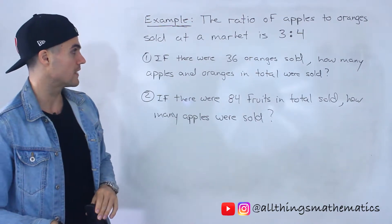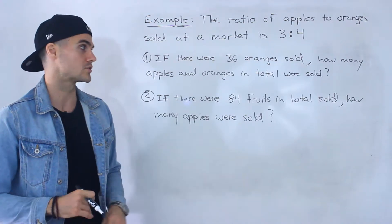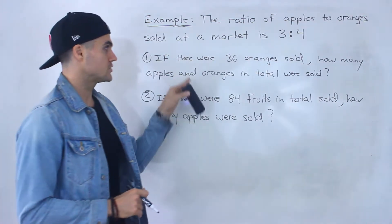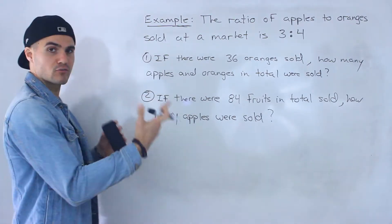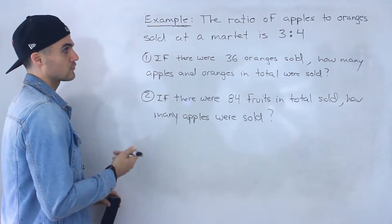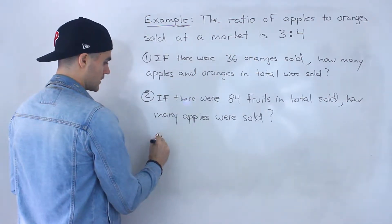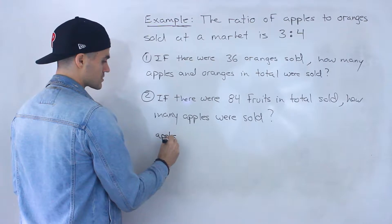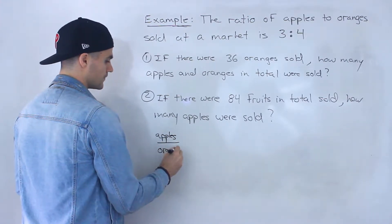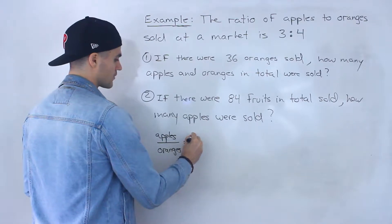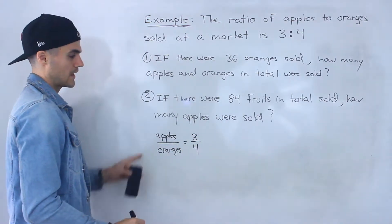So starting with number one, if there were 36 oranges sold, how many apples and oranges in total were sold? I'm going to show you how to do this question in a couple of different ways. First off, whenever I have ratios, I like to personally convert them to fractions. So we have apples to oranges 3 to 4. What we can do is say apples over oranges equals 3 over 4. That is the ratio there.